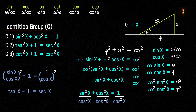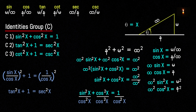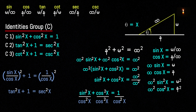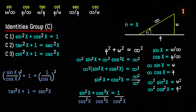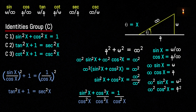Identity A1. So tan squared x plus 1 equals 1 by cos squared x, which equals sec squared x. Identity A6. Identity C2: tan squared x plus 1 equals sec squared x.